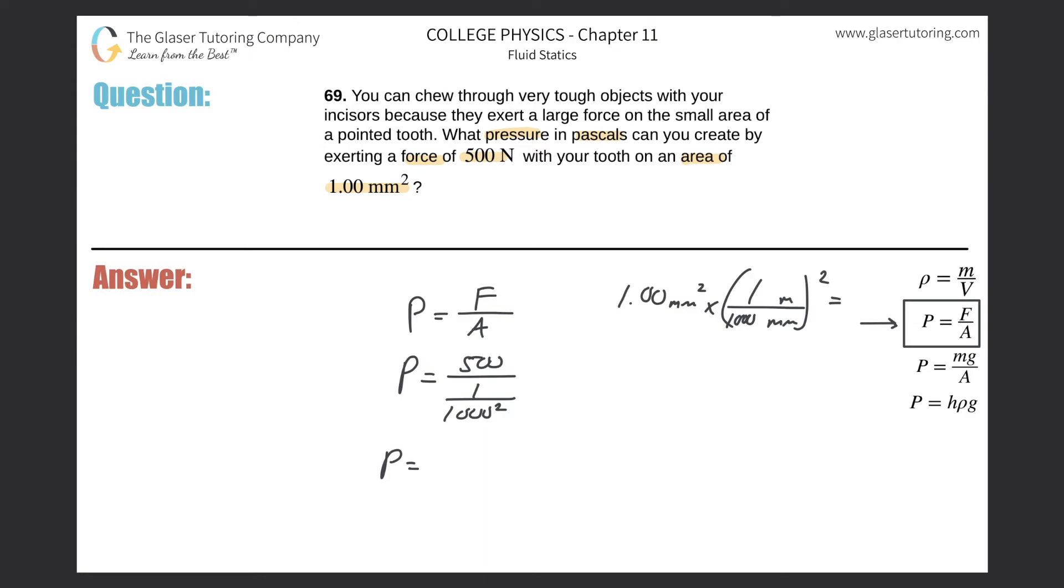I guess three sig figs would be appropriate, so 5.00 times 10 raised to the... what do we have here? Three, five... eight. Looks like eight. That is in terms of pascals. So that is a very large pressure over that particular area. So again guys, simple problem, don't overthink it.